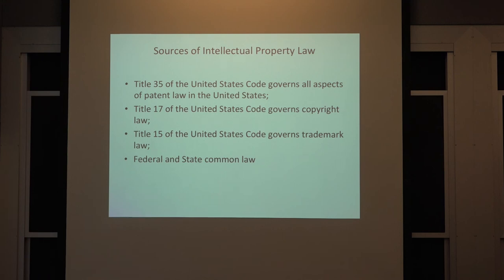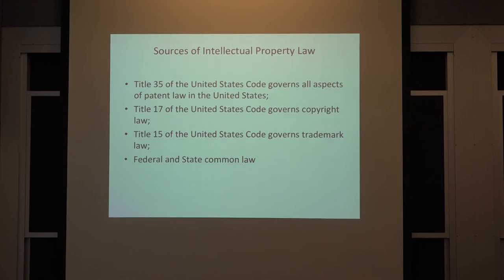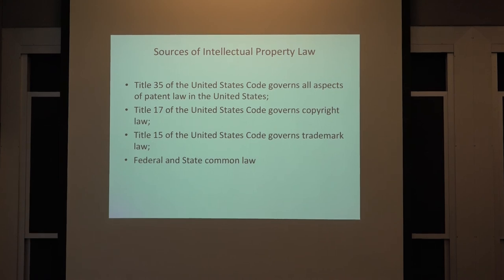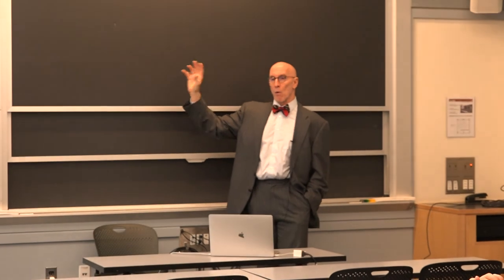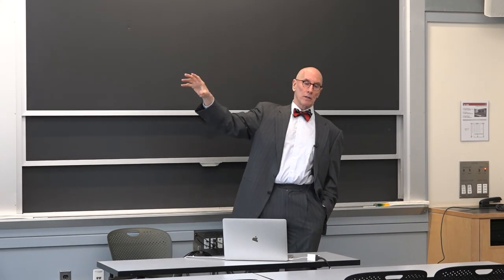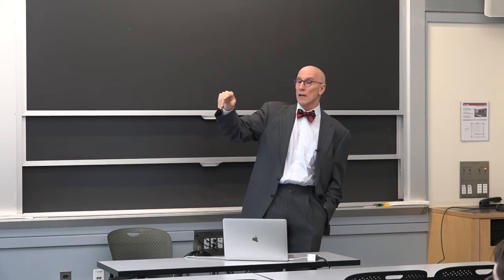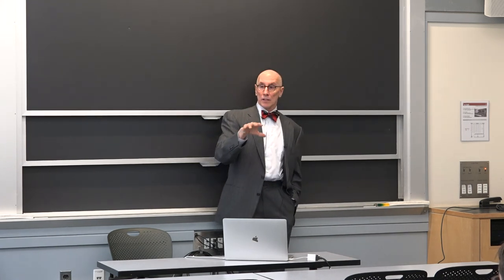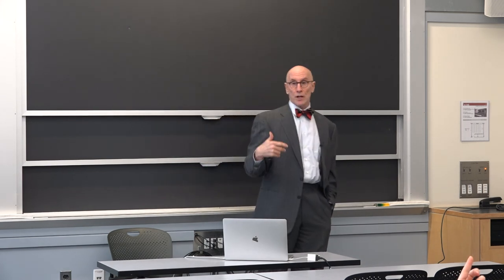After these statutes, you have federal and state common law. Congress paints the broad outline of patent, trademark, and copyright law, and then the courts fill in the details. The courts have constitutional authority to interpret the statutes passed by Congress. While Congress provides the broad outline and requirements, the real details are left to the courts. You have the Constitution, then Title 35, Title 17, Title 15, then common law — starting with the United States Supreme Court, then the Federal Circuit Court of Appeals, then Federal District Courts.